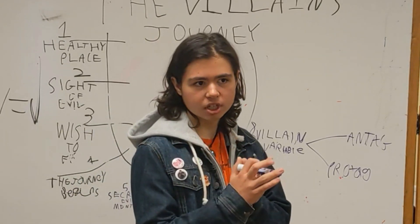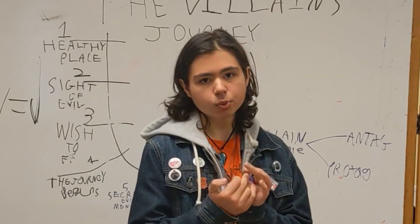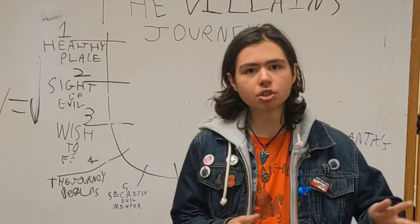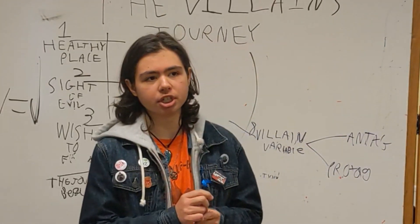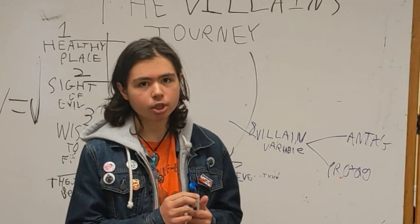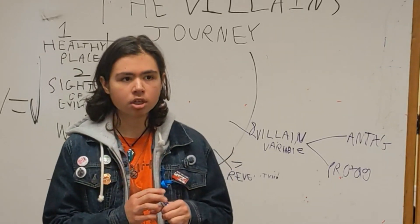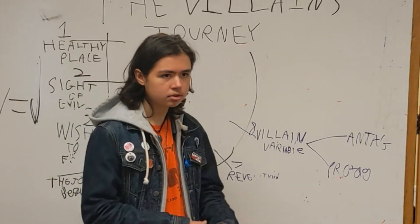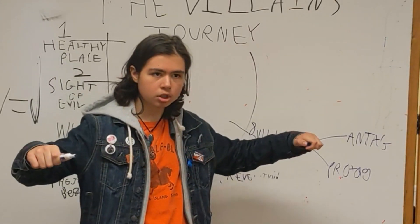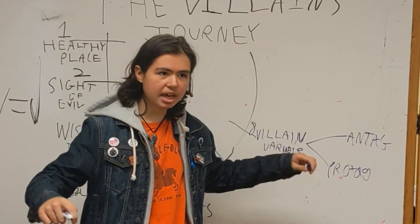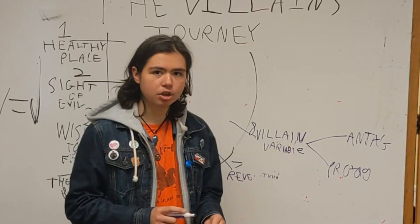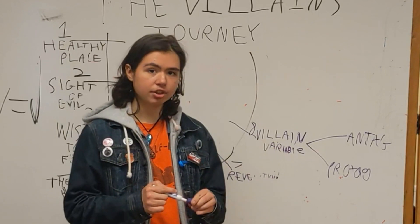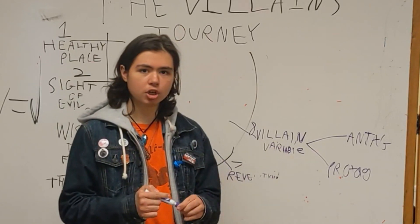This is what Zuko did. This is what most redemption arcs do. The villain doesn't usually get past this point if they're going to be redeemed. But if they're not going to be redeemed, they choose to keep going. And so, we exit the center of the Earth and we arrive in the voyage home.